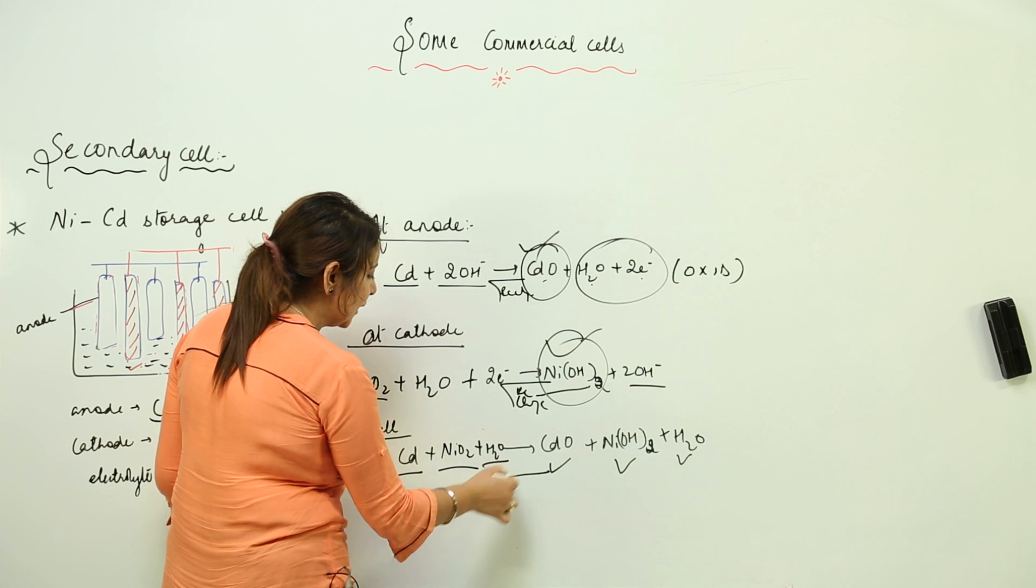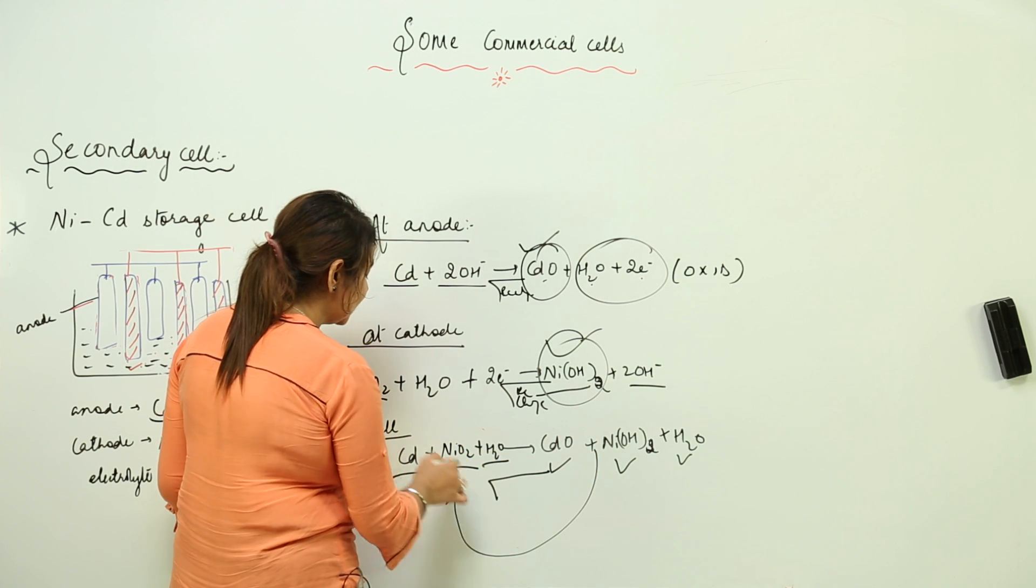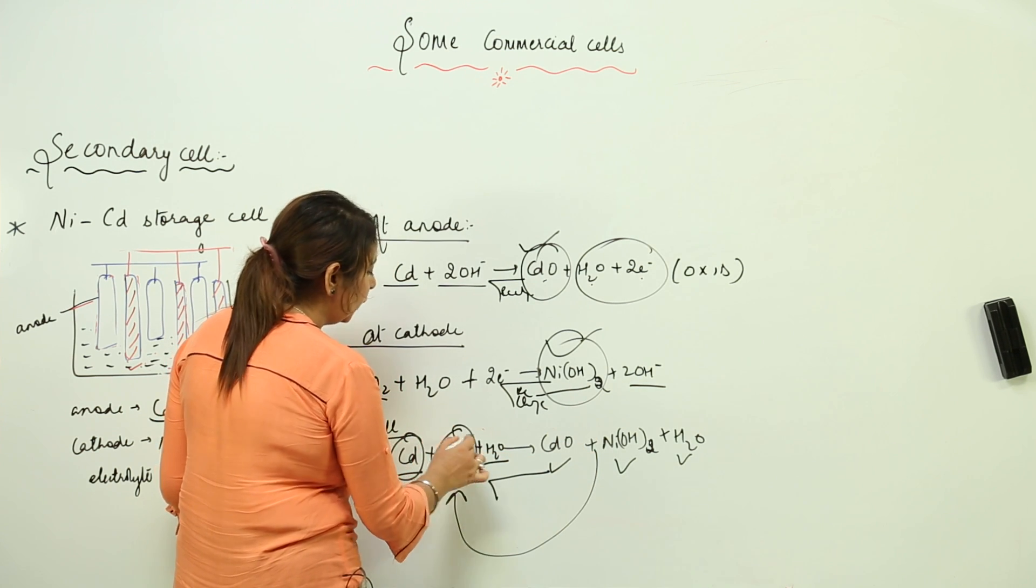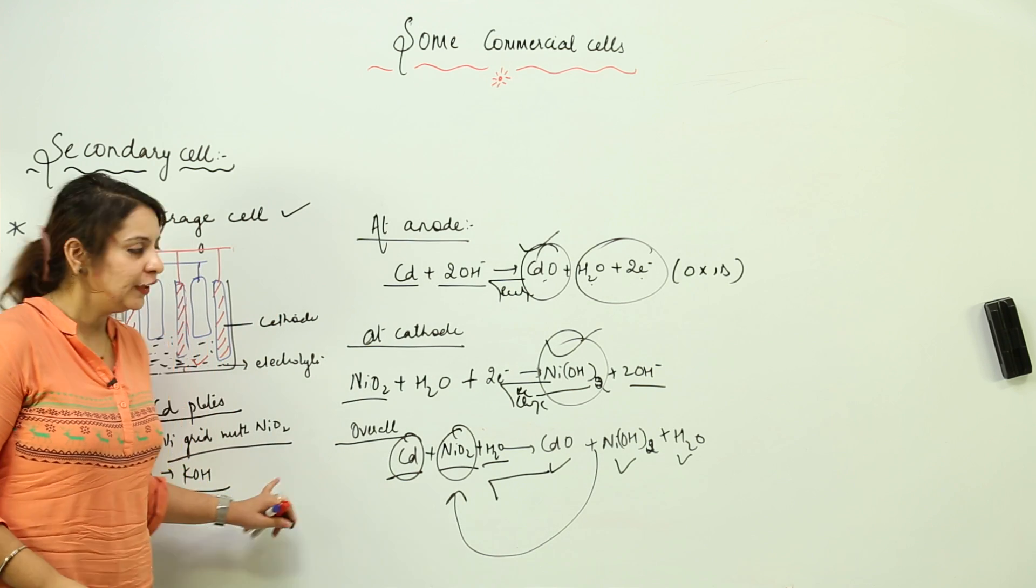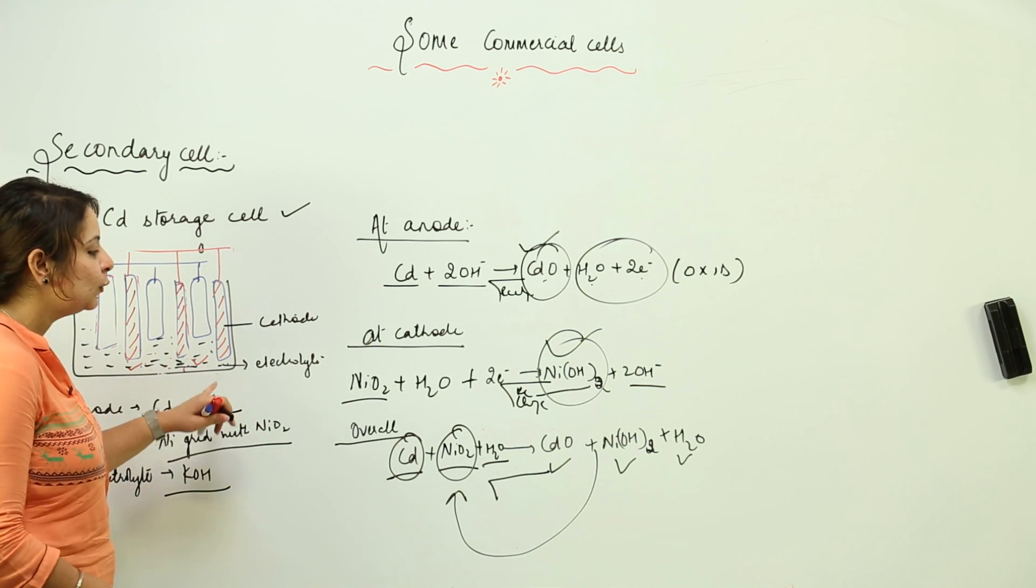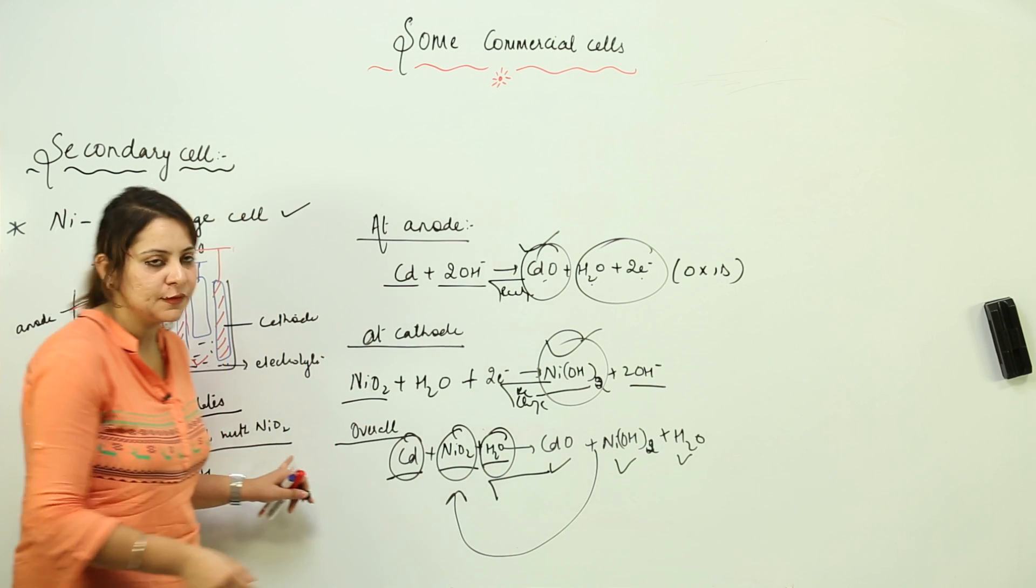When we are recharging it, it breaks up into the original components, forming the anode, cathode, and electrolytes again. The H2O comes from the aqueous electrolyte.